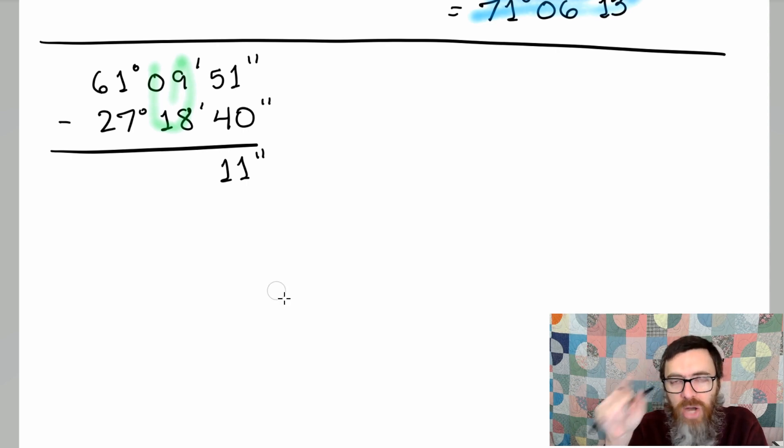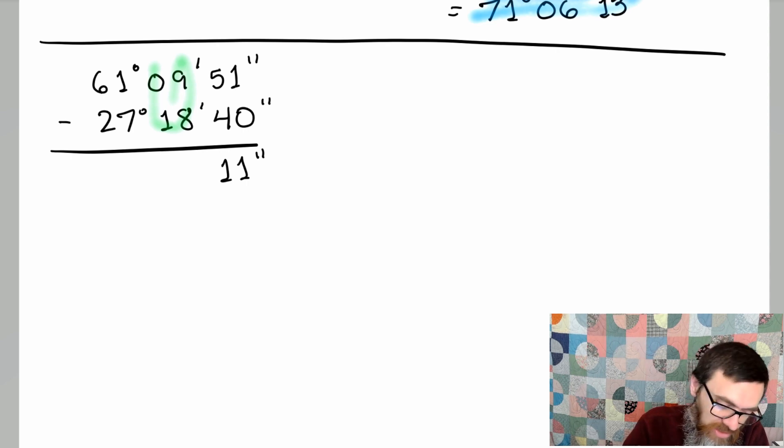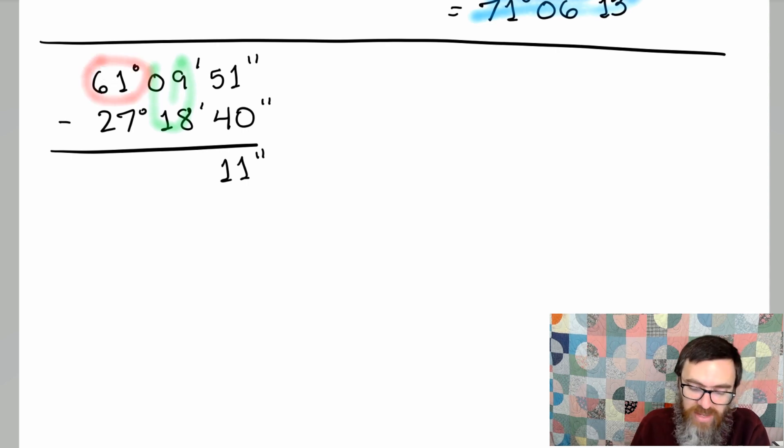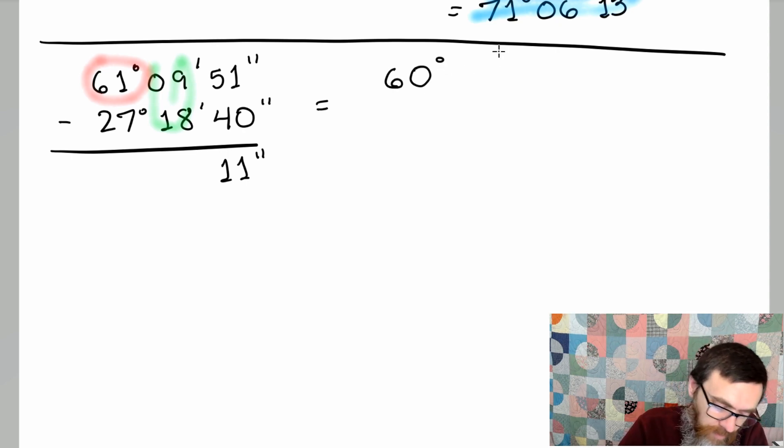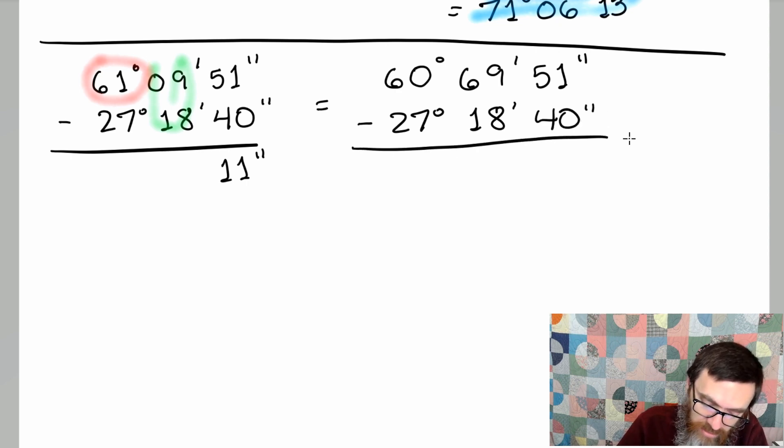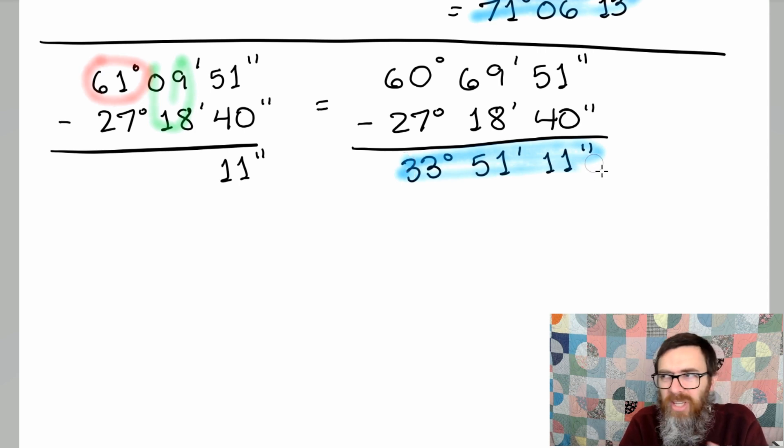In the same way that we did carrying above, we're going to need to do regrouping or borrowing down here. In other words, we're going to take this 61 and we're going to rewrite that so that I have enough minutes to do the subtraction. So this is going to become 60 degrees because we're going to put one degree off of that, and that's going to turn this into 69 minutes with the 51 seconds. So again, there's the 11 seconds. 69 minus 18 is 51 minutes. 60 minus 27 is 33 degrees. So we were able to finish that. We just had to make a slight little change there so that we could subtract without getting into negatives.